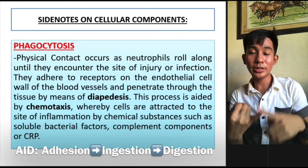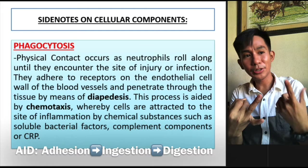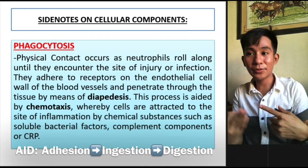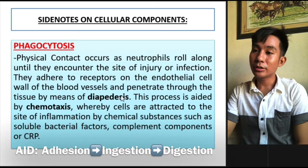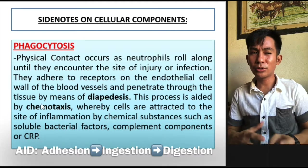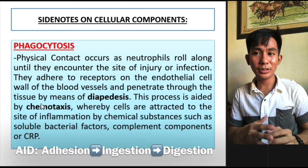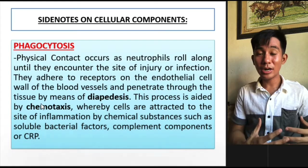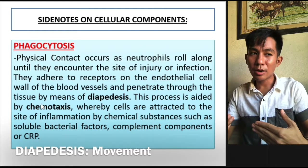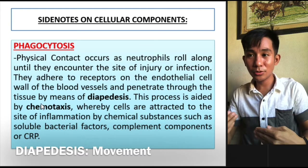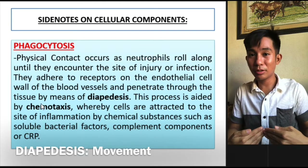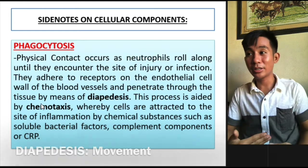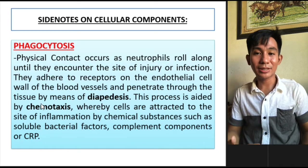A is for attachment or adhesion. I is for ingestion or engulfment. And D is for digestion or killing. Those are the basic steps in phagocytosis. Now, I would like to mention diapedesis and chemotaxis — do not be confused between the two. Chemotaxis is just the attraction, and because of this attraction, there is diapedesis: the movement of WBCs along the subendothelial wall in order to get out of the blood vessel going towards the site of the pathogen or bacteria.